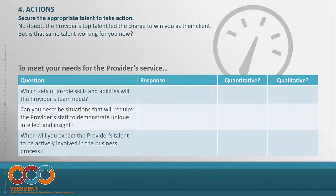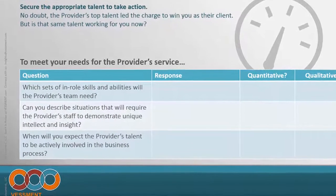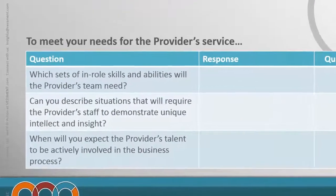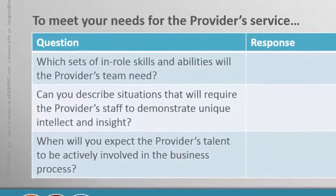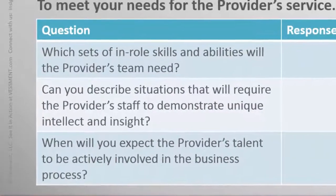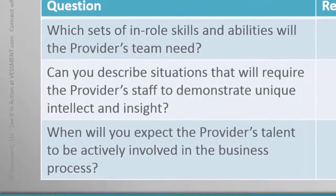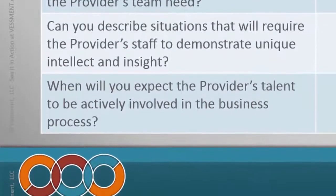The next area is all about actions — securing the appropriate talent from the provider for consistent performance. You probably met some of the provider's top people when hiring them for the contracted work, but are you still getting that talent on the engagement day in and day out? If not, you could be spinning your wheels getting people up the learning curve. You don't want to become a training ground for the provider's new talent as experienced talent is constantly moved off. Ask yourself: what are the core skills and abilities you need from the provider's team? Can you describe situations where that talent demonstrates unique intellect or insights, and what will you expect them to be involved in regarding your business decisions and processes?